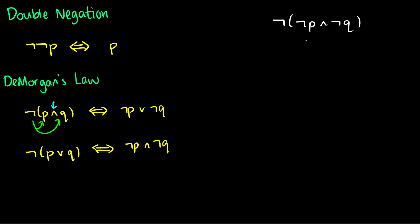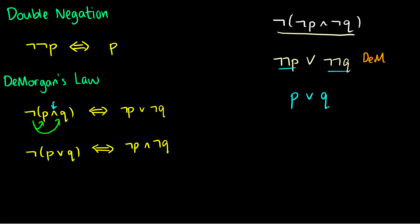Let's simplify ¬(¬P∧¬Q). First, apply De Morgan's law to the entire thing: distribute the negation to ¬P and ¬Q, giving ¬¬P∨¬¬Q, and flip the and to or. Then apply double negation: ¬¬P becomes P and ¬¬Q becomes Q, leaving us with P∨Q. So ¬(¬P∧¬Q) simplifies to P∨Q.